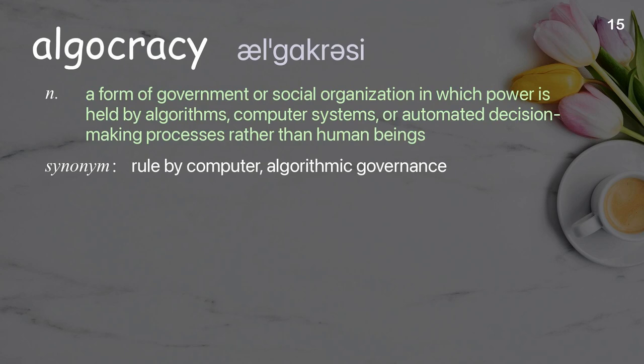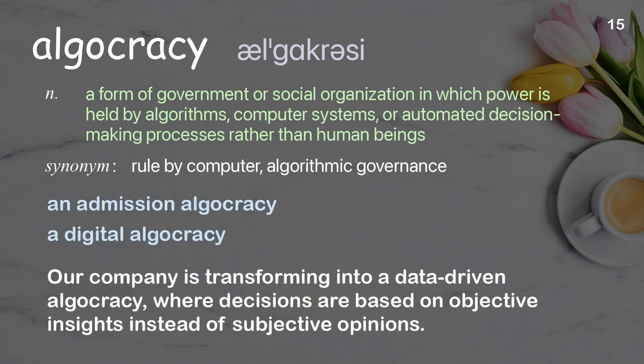Algocracy: a form of government or social organization in which power is held by algorithms, computer systems, or automated decision-making processes rather than human beings. Examples: an admission algocracy; a digital algocracy; our company is transforming into a data-driven algocracy where decisions are based on objective insights instead of subjective opinions.